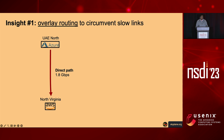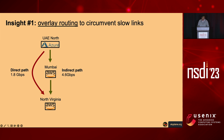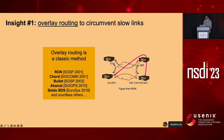One of the key insights we leverage to mitigate this is overlay routing. Consider a transfer of a dataset from the Dubai region in Azure to the North Virginia region in AWS. The direct path achieves 1.8 gigabits per second of network throughput. But taking the indirect path via the Mumbai region in AWS, I can achieve 4.6 gigabits per second—a substantial performance improvement by going through a longer indirect path. This is actually a classic result; overlay routing dates back to the Resilient Overlay Networks paper at SOSP in 2001.